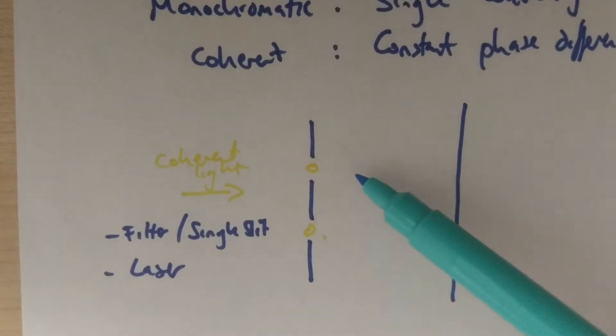If they traveled the exact same distance, they would be in phase because they started off in phase. If one slit traveled one wavelength further than the other, then they would still be in phase. Two wavelengths, three wavelengths, and so on.